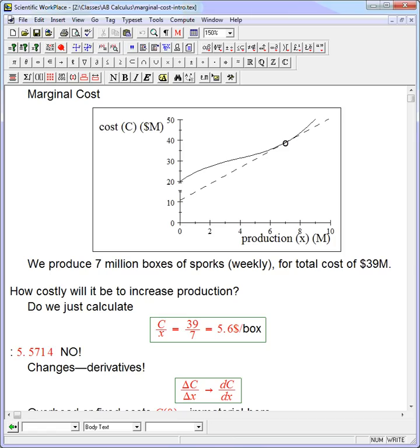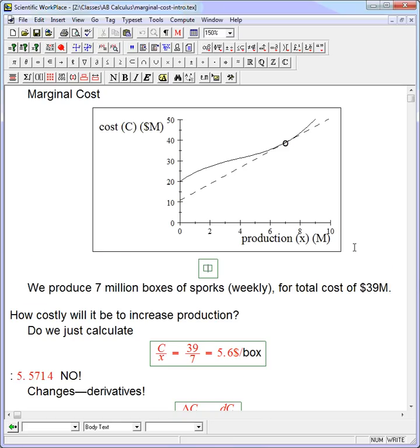We've already seen that the reason C of 0 is not equal to 0 is overhead or fixed costs that don't depend on production at all. Now, it's always increasing. That makes sense, because if production increases, it's just going to cost more. That's a very easy thing to say in terms of marginal cost: it says that C'(x) is always greater than 0. If it weren't, that'd be really weird. It'd say it was actually cheaper to produce more sporks.